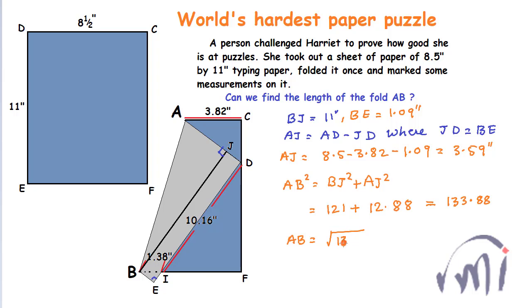So AB will be equal to square root of 133.88 and this will be equal to 11.57 inches so the length AB will be equal to 11.57 inches. So that's all for this video and next week we will take one more new puzzle.